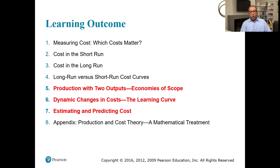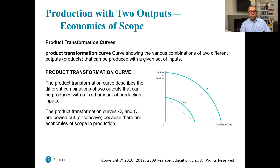In chapter seven, part three, we're going to cover three things: production with two outputs, economies of scope, and the impact of a learning curve with experience. We'll also cover estimating and predicting cost. In the next part, we'll discuss the production and cost theory with mathematical treatment.